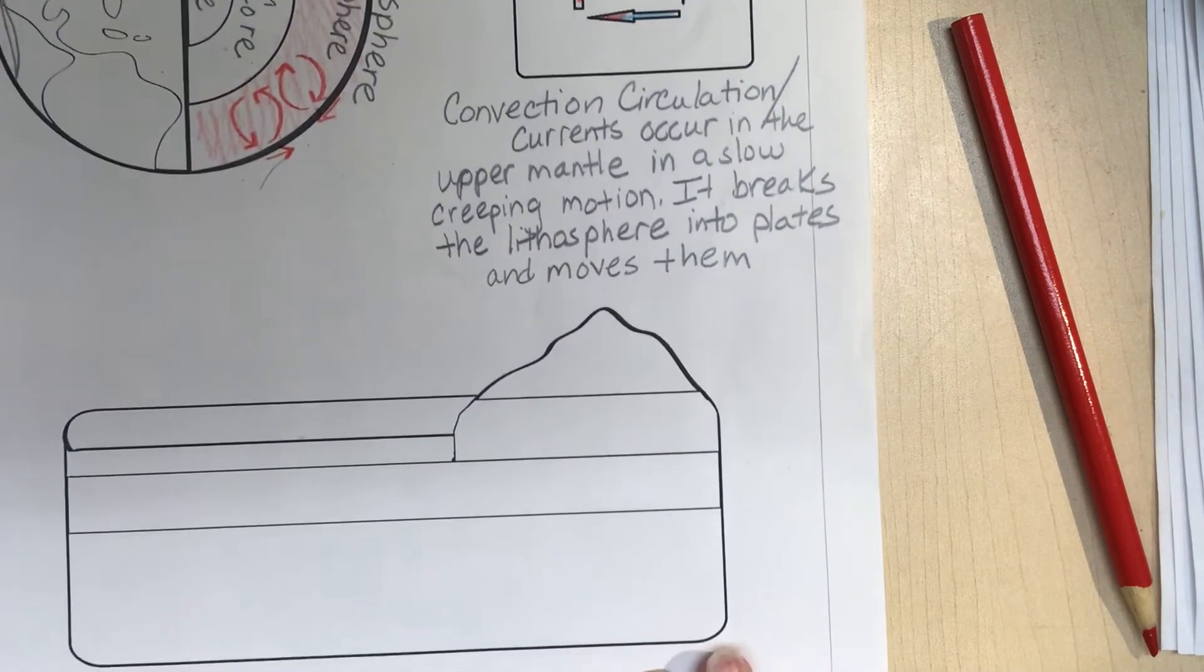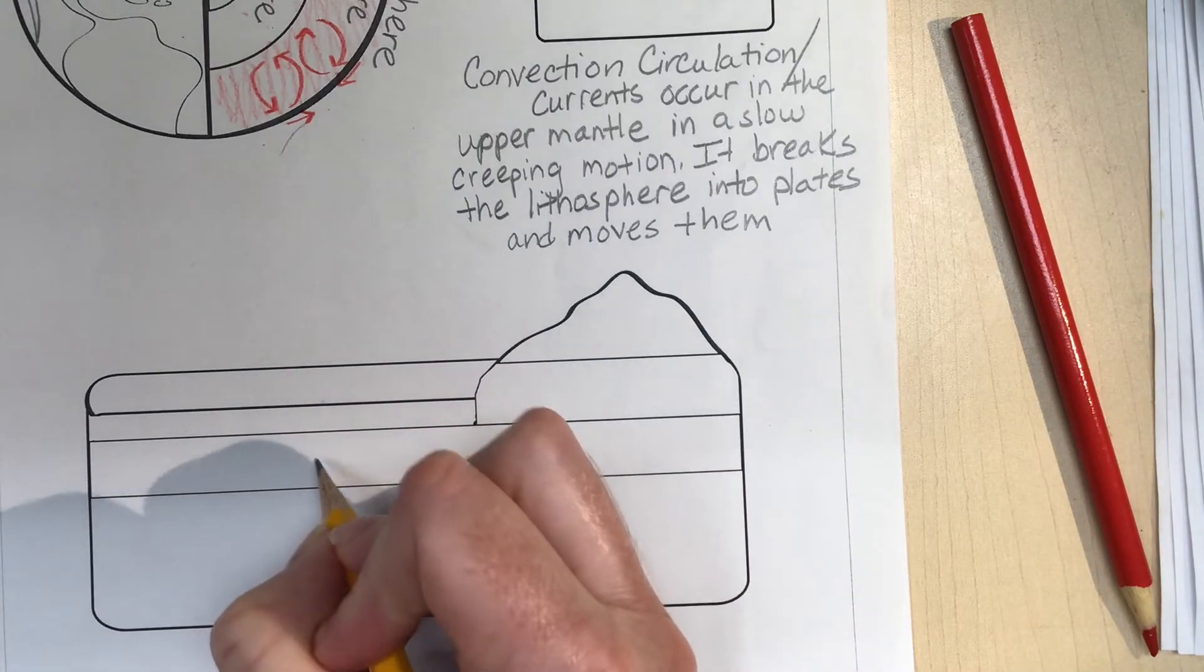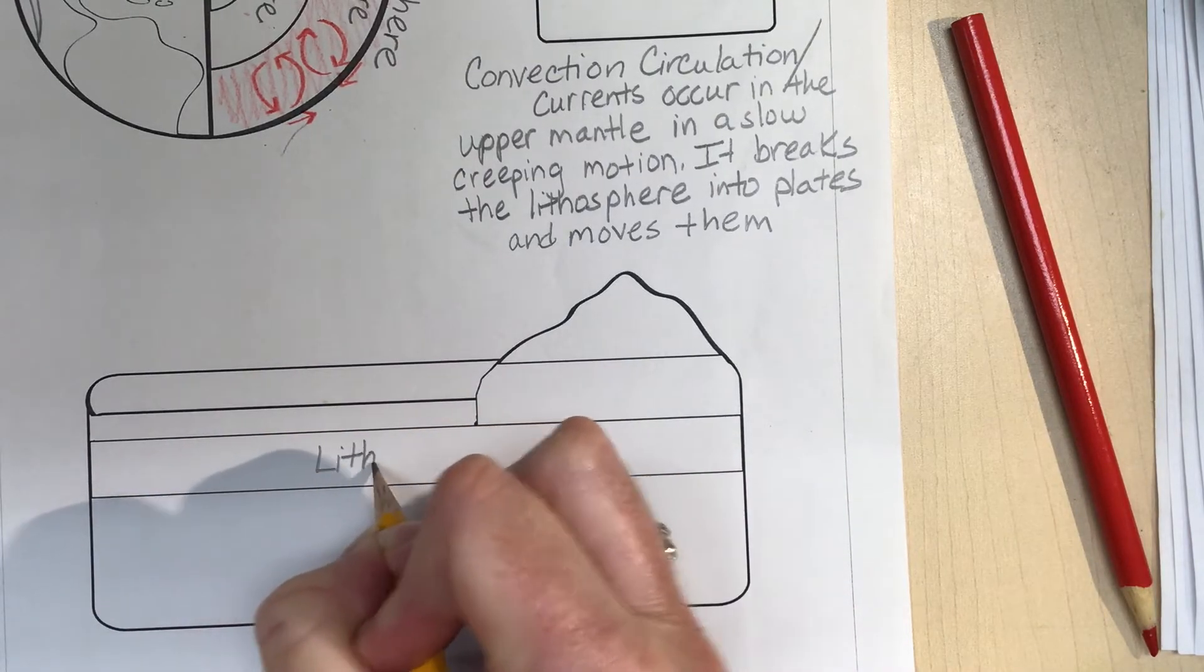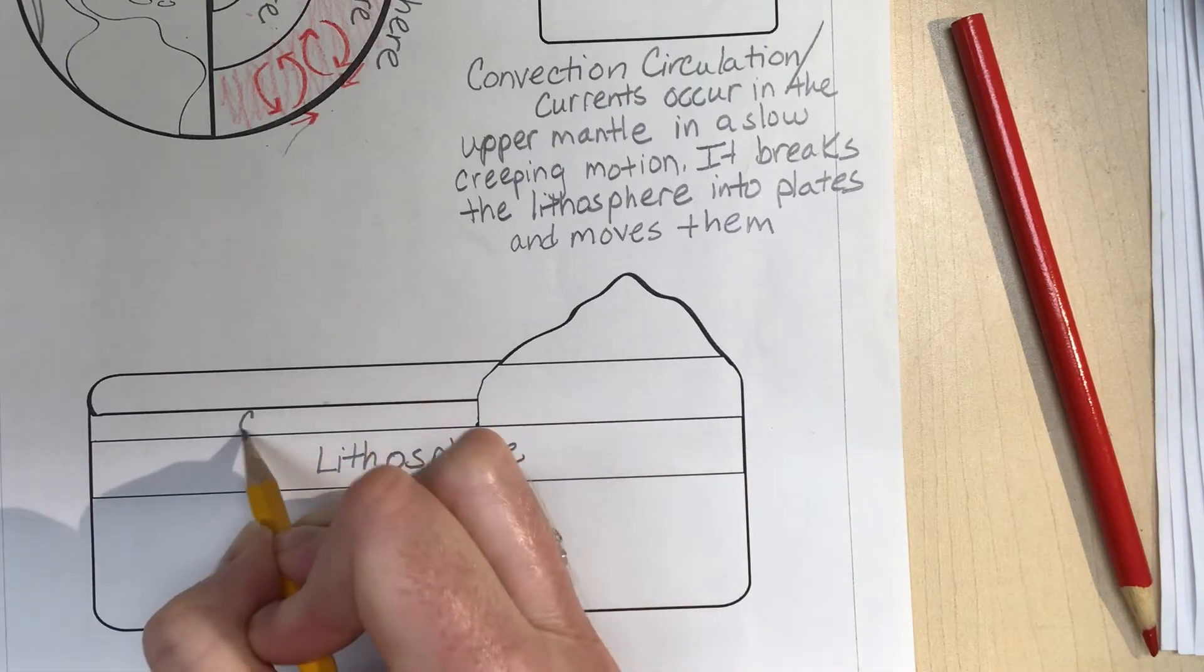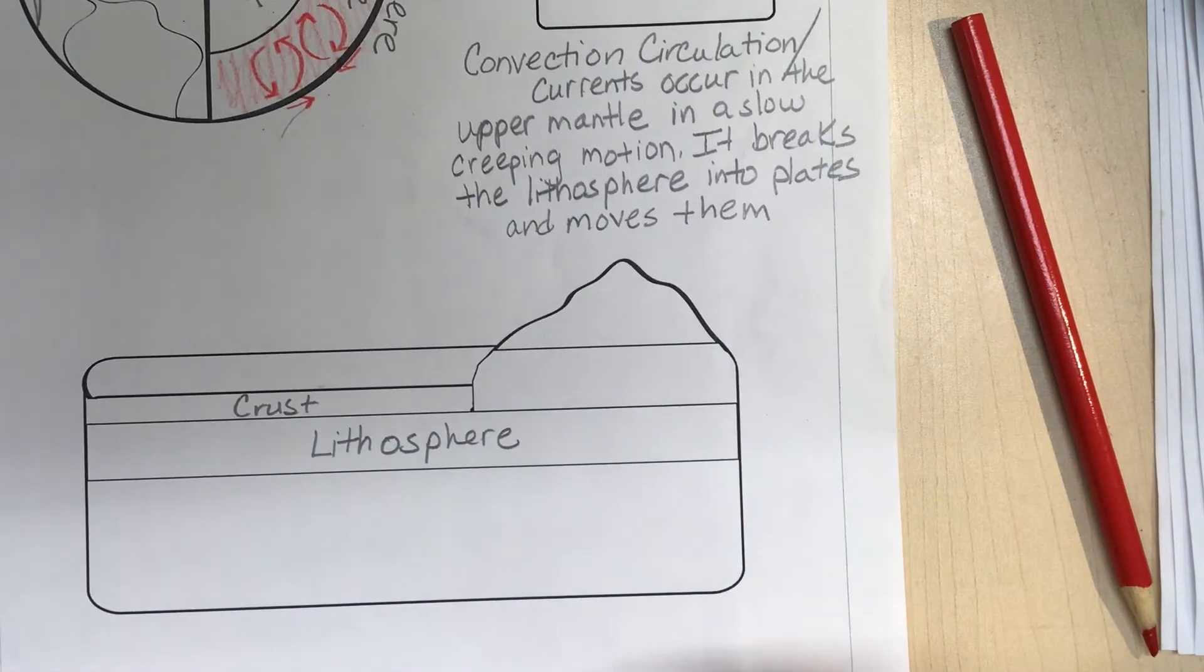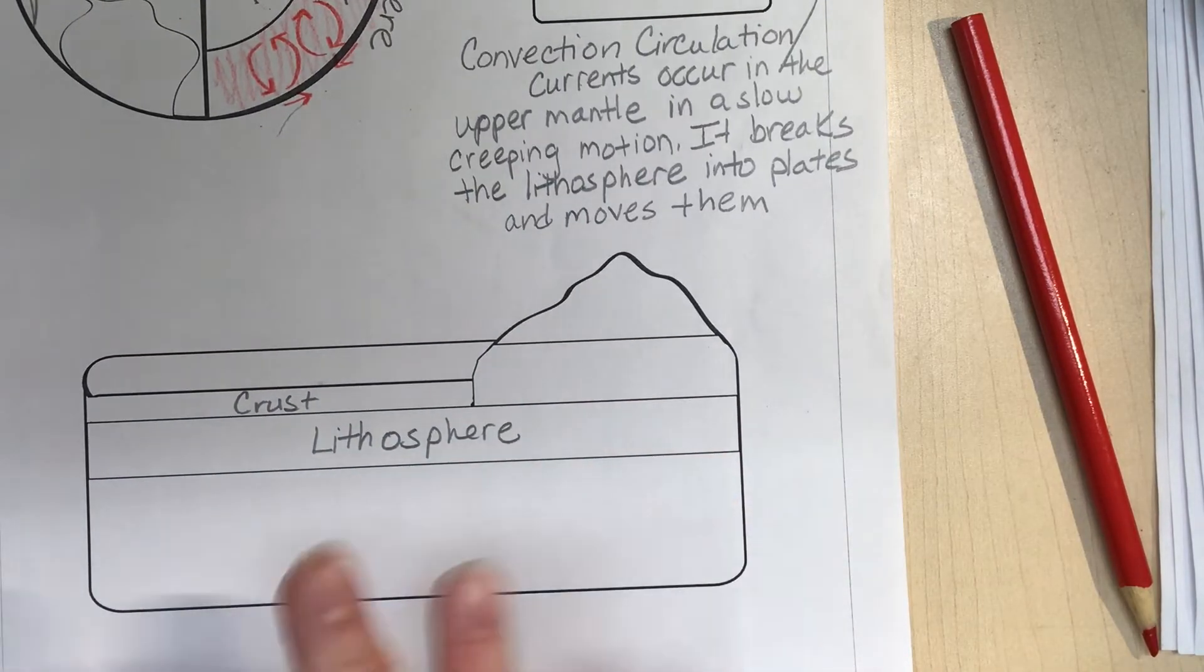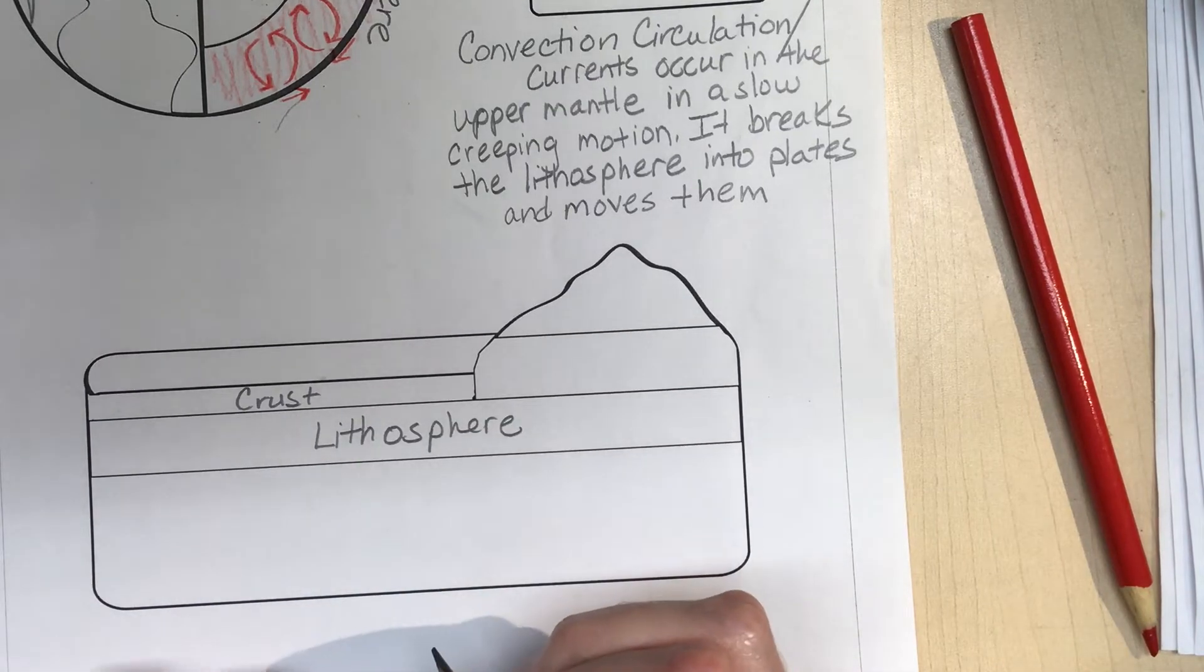Let's take a look at the cross section of the Earth here. If we label some of these parts, here we have a separation between the lithosphere and the crust. Again, in our class you don't have to know the order of that - we kind of use them interchangeably - but that's technically the way it is.